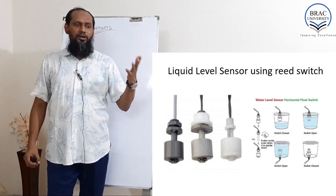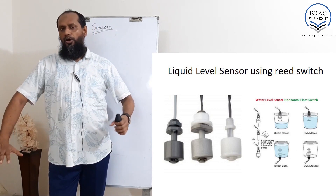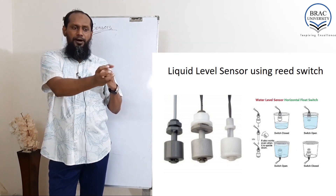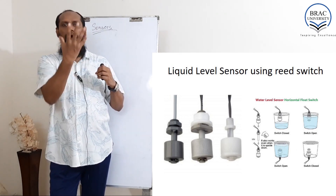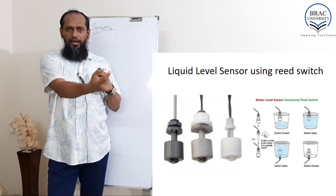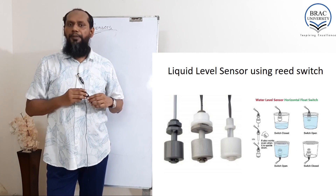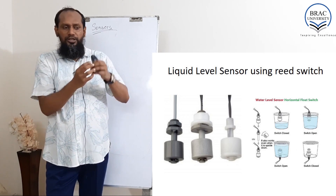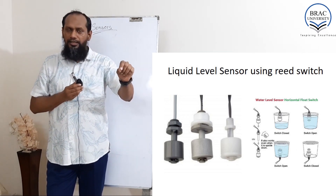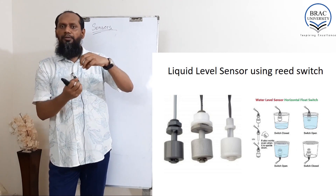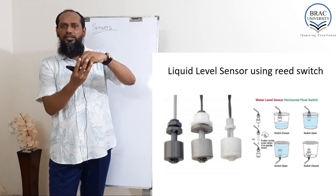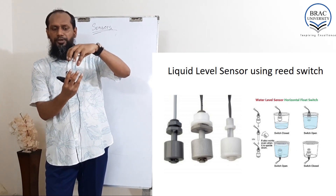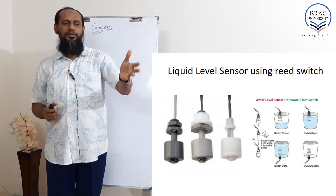This is another interesting sensor — a liquid level sensor. When the water rises, the floating part of the sensor goes up. Inside the circular part there is a permanent circular magnet. When that magnet comes near the reed switch — which is inside the tube — the reed switch gets short. When the float comes down, the reed switch becomes open. That is the main principle of this kind of sensor.